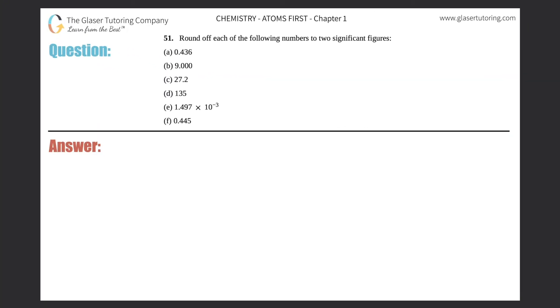Number 51. Round each of the following numbers to two significant figures. And then we have A through F. So A, B, C, D, E, and F. Okay.